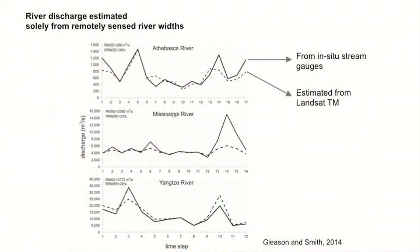The recent discovery of a new hydraulic geometry relationship has enabled us to potentially estimate absolute river discharge from space using repeated width measurements from optical images.